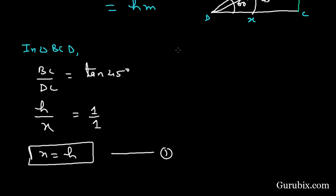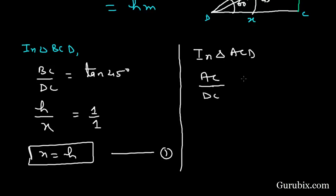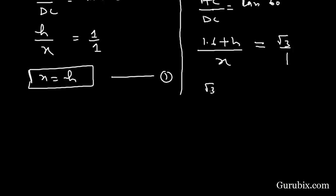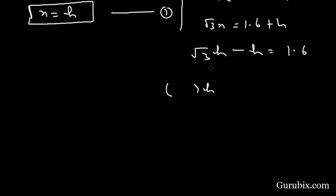Now we move to triangle ACD. We find the ratio of AC to DC, which equals tan 60 degrees. AC is 1.6 plus H, DC is X, and tan 60 degrees is √3. Therefore √3 · X equals 1.6 plus H. We know the value of X is H, so substituting: √3 · H equals 1.6 plus H, which gives √3 · H minus H equals 1.6.